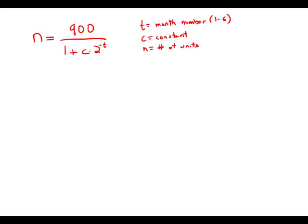What is the number of units of its product the company is scheduled to produce in month number 6 of the next fiscal year? Notice that we're being asked, when T equals 6, what is N? And if we know T, the only other thing we need to know is C. If we could figure out C, then we would be able to predict N.